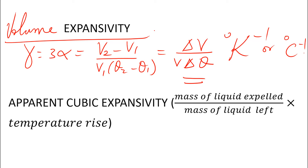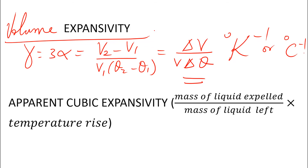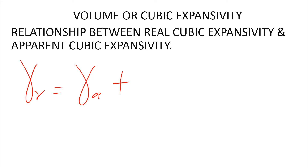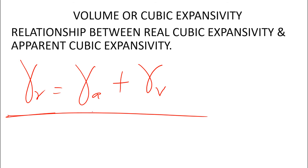The cubic can be real or apparent. The real cubic expansivity is a change in volume per unit volume per degree rise in temperature, while the apparent is a change in volume per unit volume per degree rise in temperature when the liquid is heated in an expansible vessel. The formula for apparent cubic expansivity uses mass of liquid expelled over mass left times temperature rise. The relationship is: real cubic expansivity equals apparent cubic expansivity plus the cubic expansivity of the vessel containing the liquid.